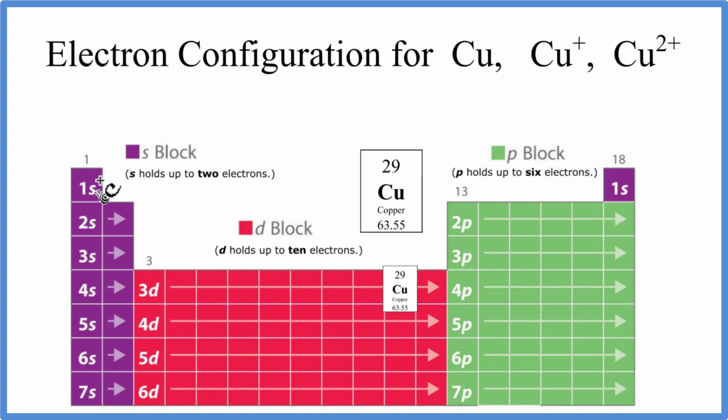So we'll start with 1s. S can hold up to 2. We have 1s1, 1s2. We go to 2s, put 2 in there. 2p. P can hold up to 6. So we've used 10 electrons. We have 29.